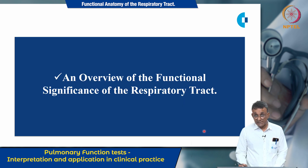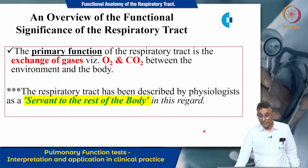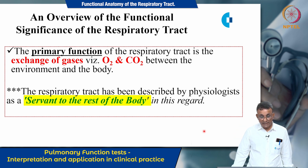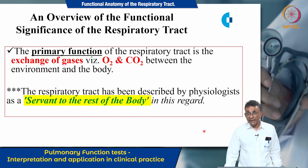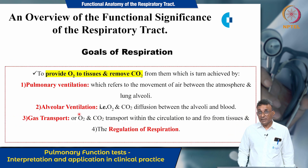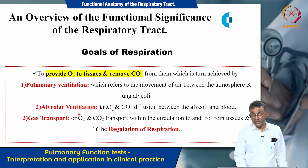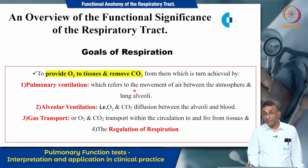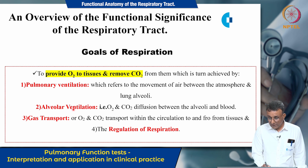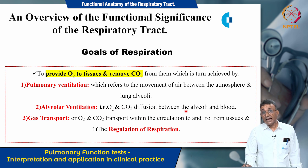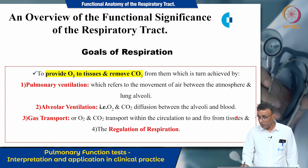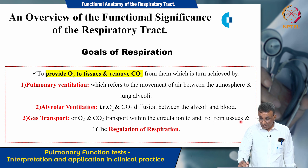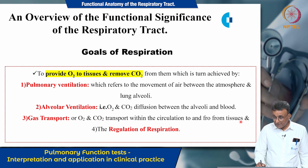The primary function of the respiratory tract is exchange of gases — namely oxygen and carbon dioxide — between the environment and the body. Many physiologists have described the respiratory tract as a servant to the rest of the body. In order to provide oxygen to tissues and remove carbon dioxide, four important steps are needed: pulmonary ventilation, alveolar ventilation, gas transport within the circulation, and the regulation of respiration.